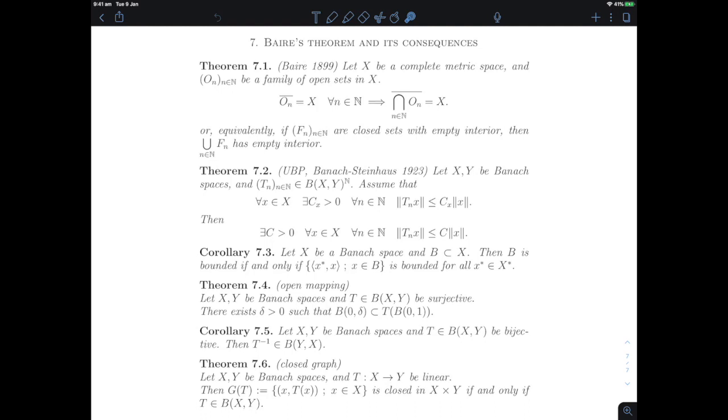This theorem of Baire about complete metric spaces. What does this theorem tell us? It tells us that if we have a family of open sets that are large in a topological sense, and large in a topological sense will be they are dense, their closure is the entire space, then even if you intersect all of them, even countably many of them, it doesn't matter. You're still very large, you're still dense in the entire space.